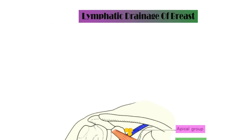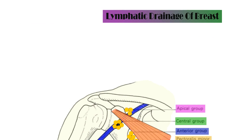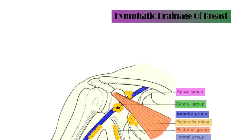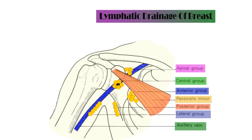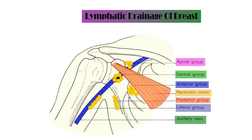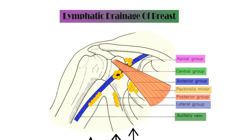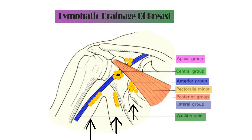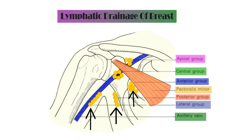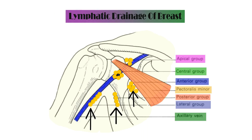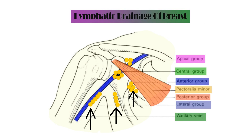Now let's talk about Berg's levels of axillary lymph nodes. Level one is lateral and below the pectoralis minor muscle. Three groups of lymph nodes are situated at this level: the anterior, lateral, and posterior groups. We can remember them easily as PAL or LAP.